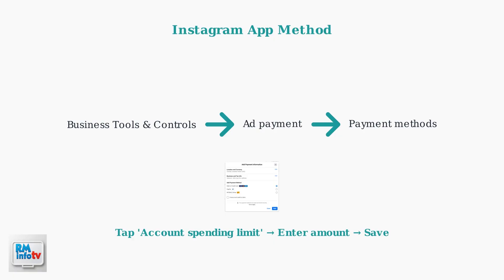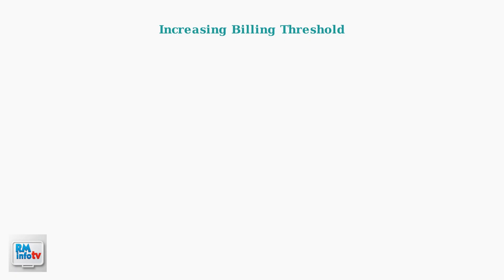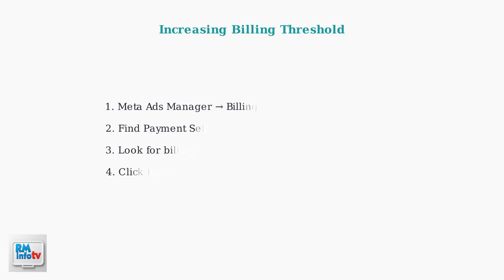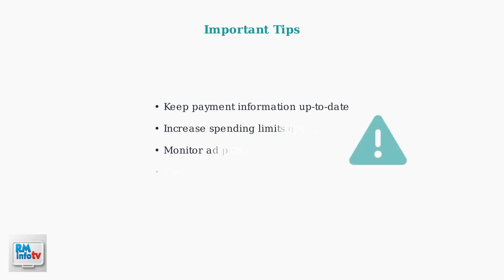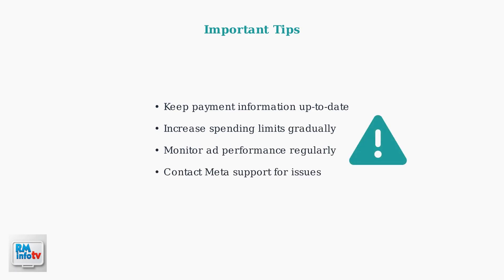Your new limit will be applied to future ad campaigns. You can also increase your billing threshold, which determines how much you can spend before Meta charges your payment method. In Meta Ads Manager, go to Billing and look for Payment Settings. If you're eligible, you'll see an option to increase your threshold — click Edit and select a higher limit. If you encounter issues changing your limit, ensure your payment information is up to date and contact Meta Support if needed. Remember to increase spending gradually and monitor your ad performance to optimize your budget effectively.